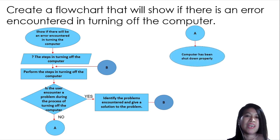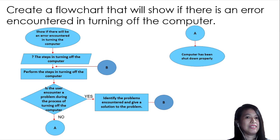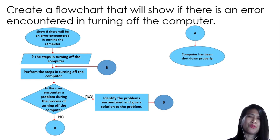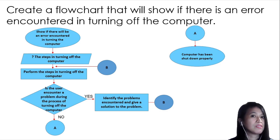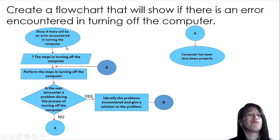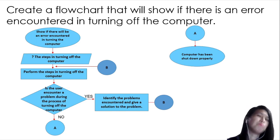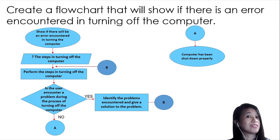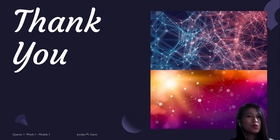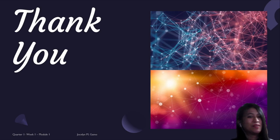If no problem was encountered, you do not go back to the error-handling procedure. This is what we call a sub-process using the decision box. Those are the different ways to use the various flowcharting symbols and solve the given problem. I hope you've learned a lot about how to create a flowchart and answer the problems given to you. Thank you, God bless, keep safe everyone, and see you in our next video lesson!